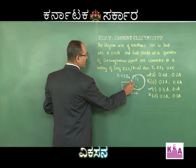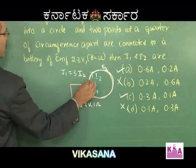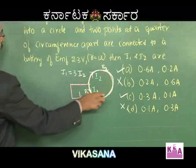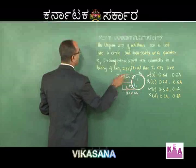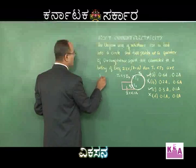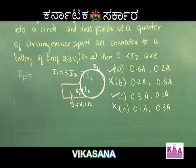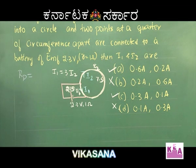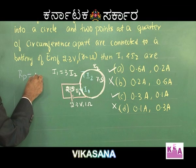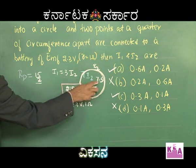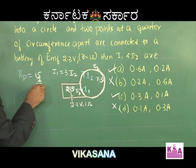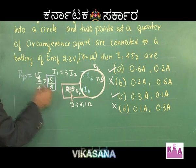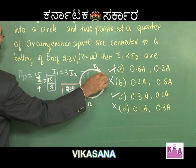Let us calculate. R2 is 7.5 ohm and R1 is 2.5 ohm, because one arc is one quarter and the other is three quarters of the total 10 ohm wire. The parallel resistance Rp: the greatest is R2 = 7.5 ohm, which can be written as 15 by 2. How many times is 2.5 in 7.5? Three times — add 1 to get 4. So Rp equals 15 divided by 8.